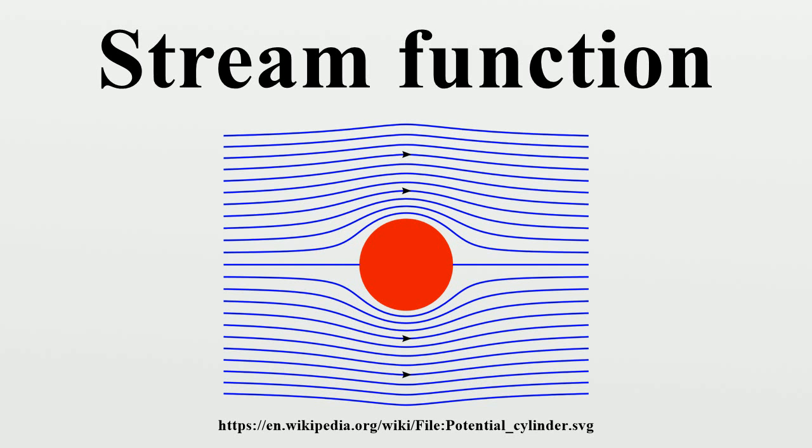Considering the particular case of fluid dynamics, the difference between the stream function values at any two points gives the volumetric flow rate through a line connecting the two points.